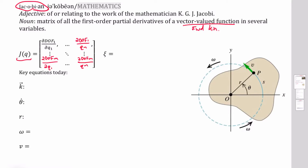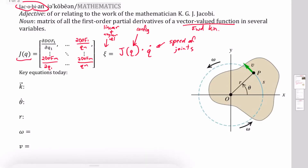This J matrix tells us the linear and angular velocity of our end effector. We get that by multiplying the Jacobian at the current configuration by how fast we are moving each joint — the joint speeds. Remember that J is a function of q, so you must recompute J at every different configuration.